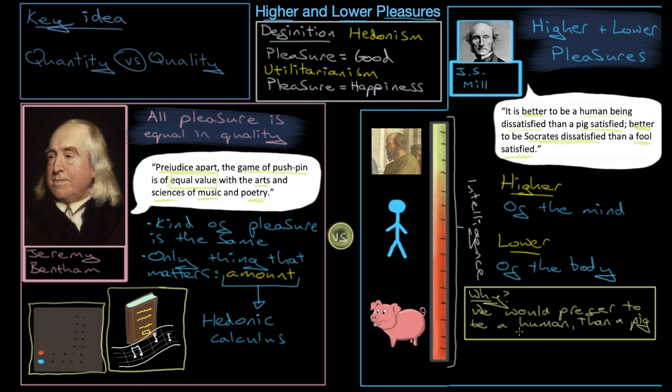The final question that you probably have in regards to Mill is how on earth do we decide between the higher pleasures and the lower pleasures? Well, we decide which ones go into which category. So, between higher and lower. This way.